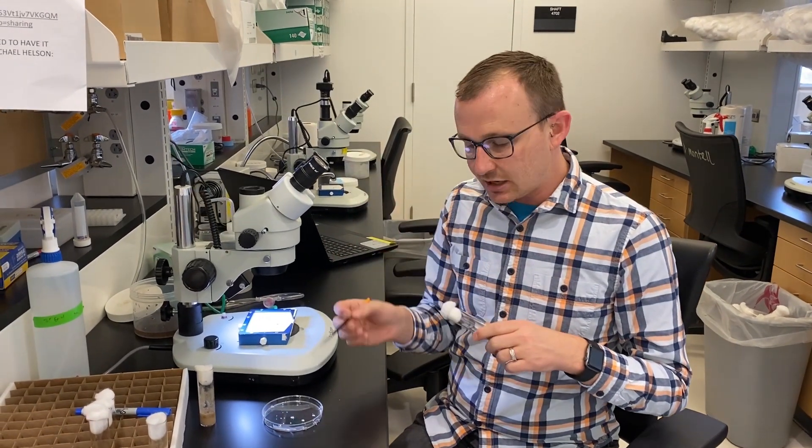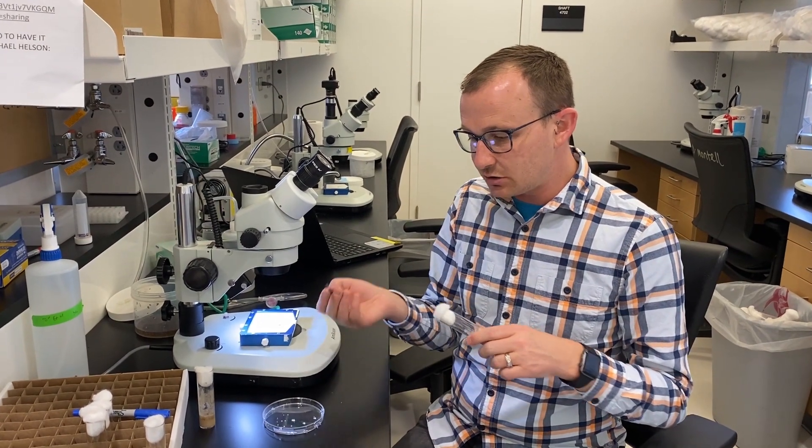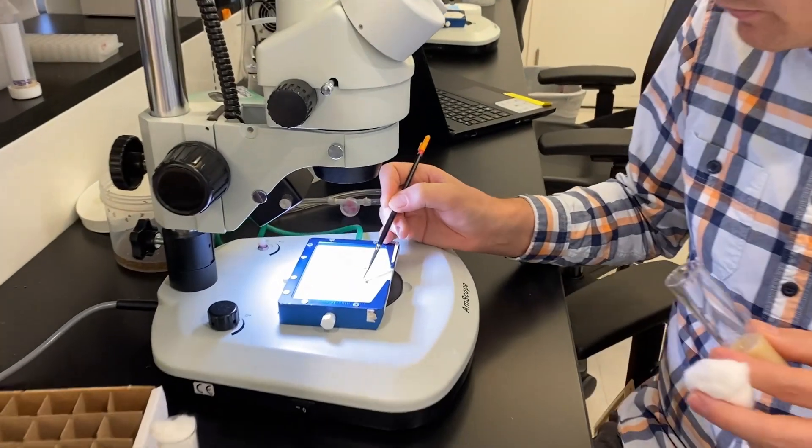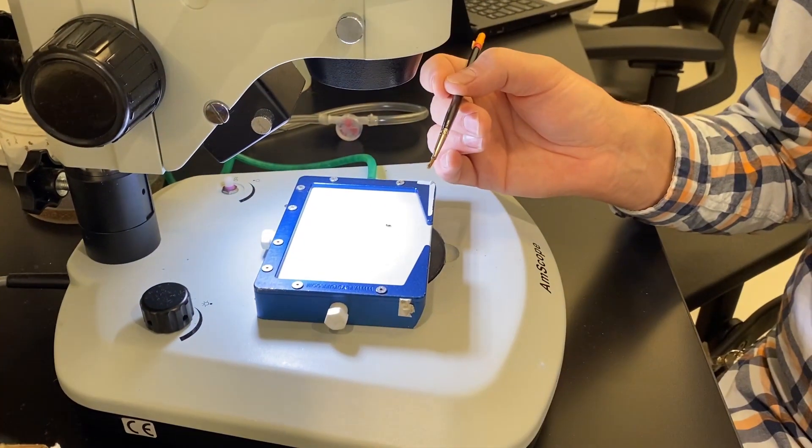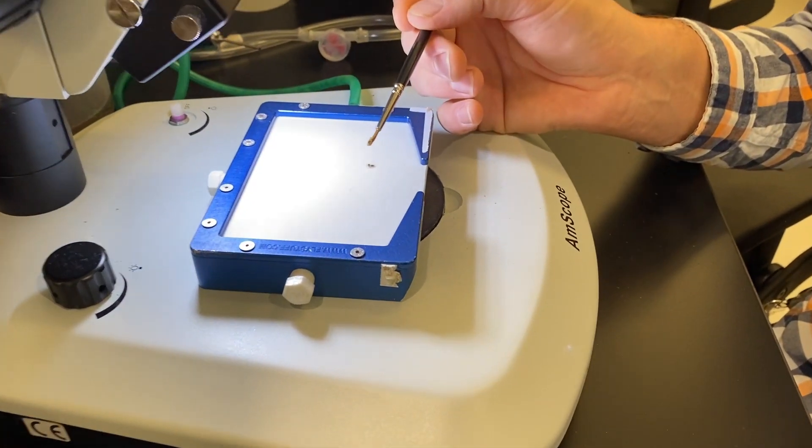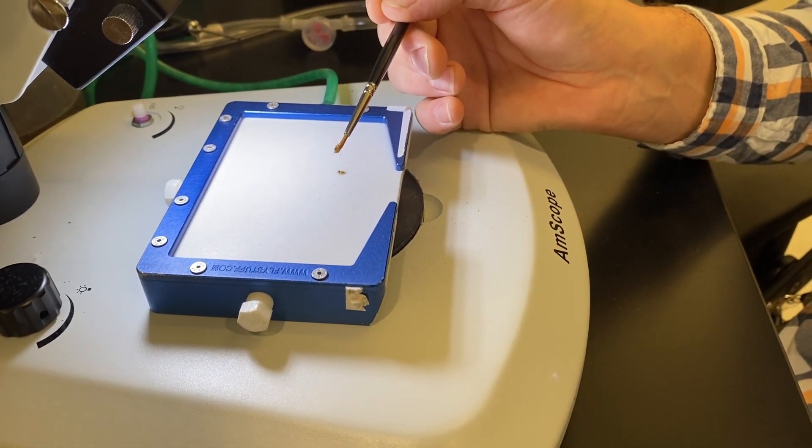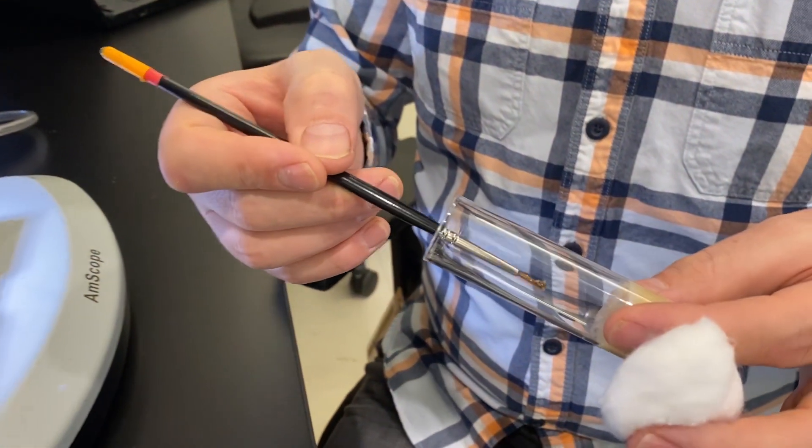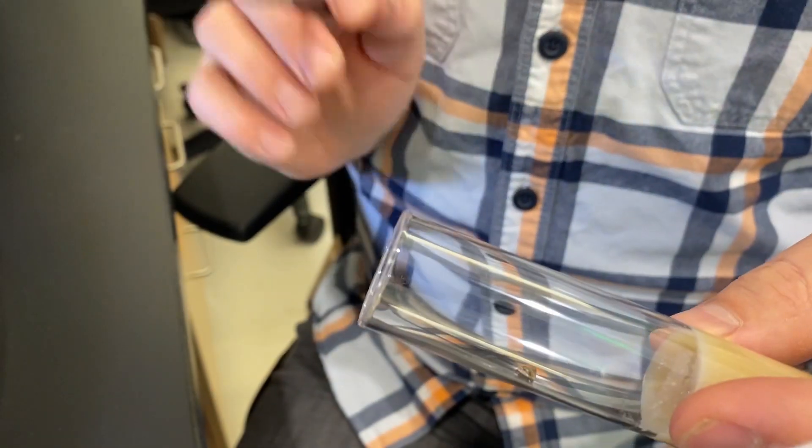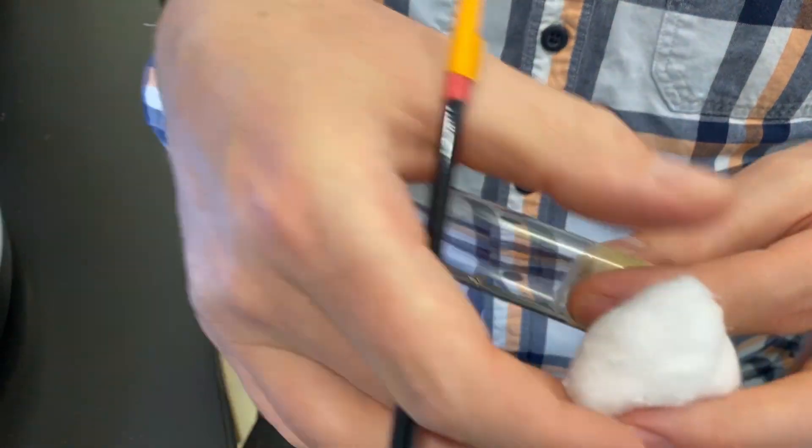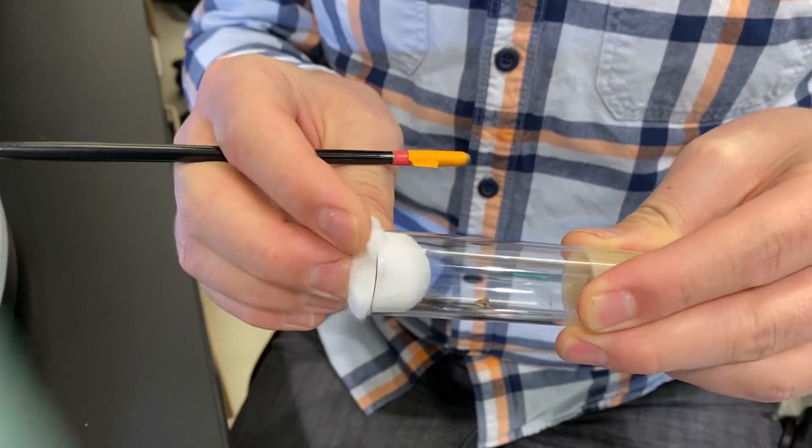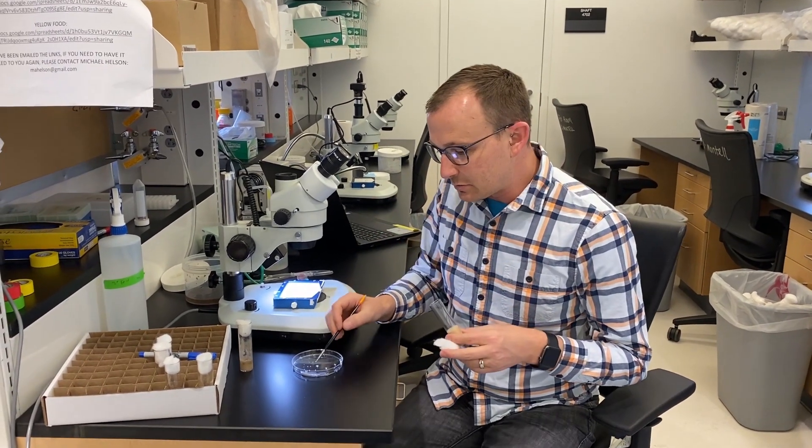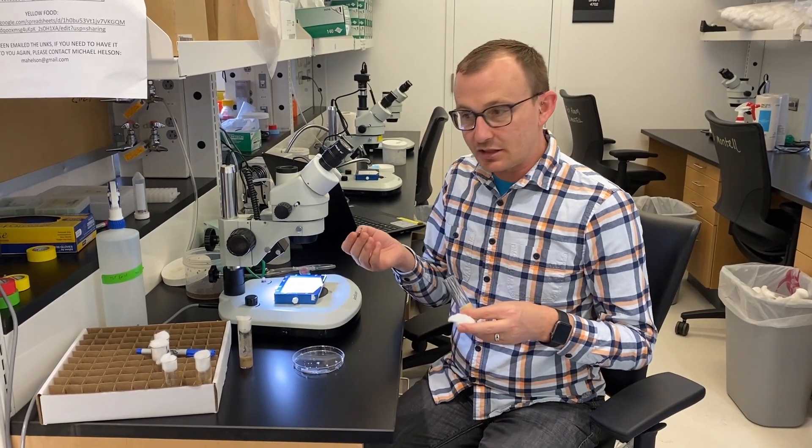So again, maintaining the wet paintbrush, you can go ahead and just pick them right back up. Sometimes I do this all at the same time. So I've picked up all three virgin females. And then what I can do is I can go ahead and just put them right onto the wall of the new vial very gently. And then go ahead and put them in there. Alright.